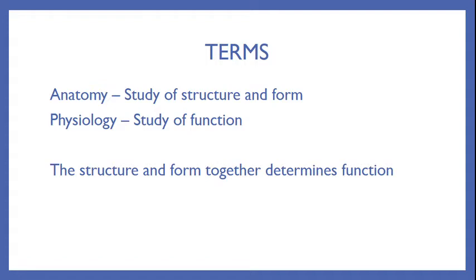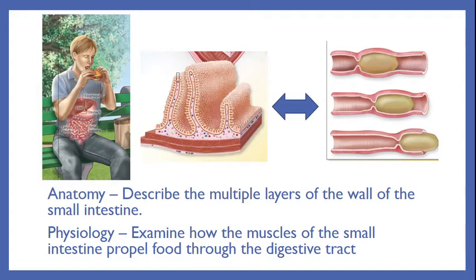An anatomist and a physiologist are going to look at the world in two different ways. An anatomist seeing a man eating a hamburger would study the small intestine by describing the multiple layers of its wall. In comparison, a physiologist would examine how the muscles of the small intestine are propelling food through the digestive tract. Both study the small intestine, but they look at it in very different ways.